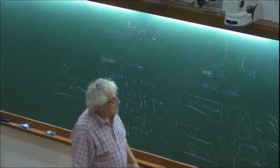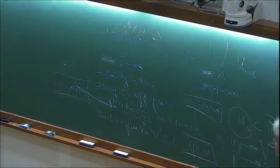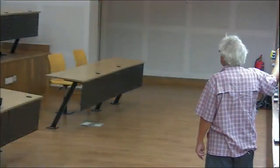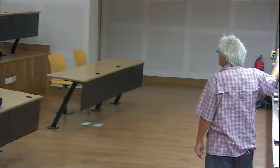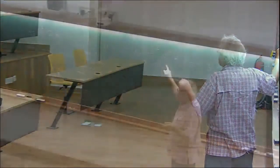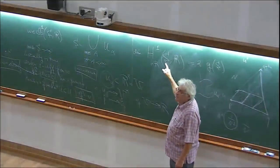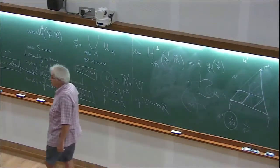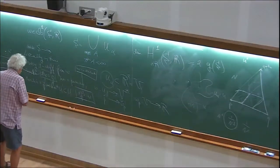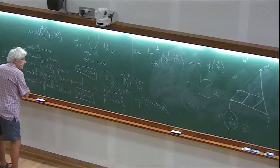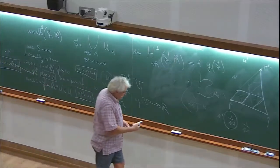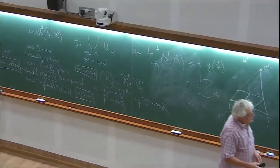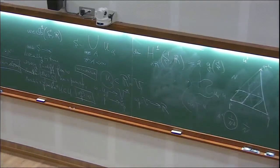Differential forms with the condition d omega = 0 are called closed, and if they have a primitive they are called exact. This condition goes with the term 'omega is closed,' and having a primitive goes with 'omega is exact.' A closed differential form is locally exact. This gadget — the cohomology — measures whether globally on the whole surface a closed differential one-form is exact or not.